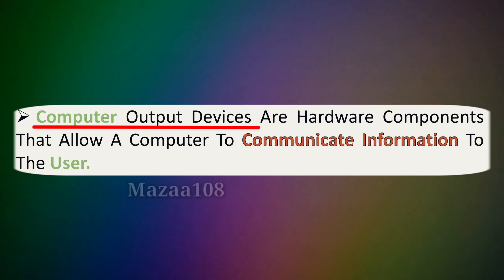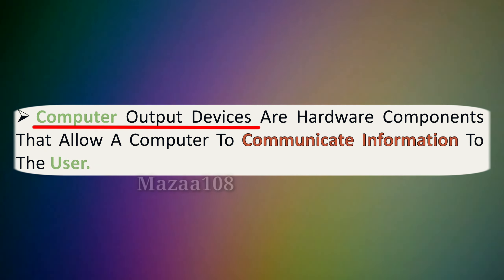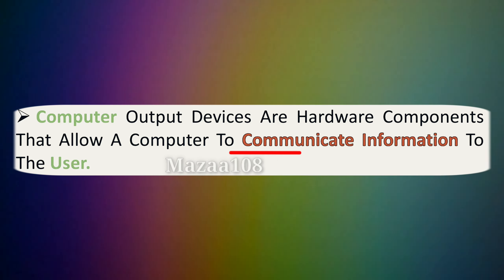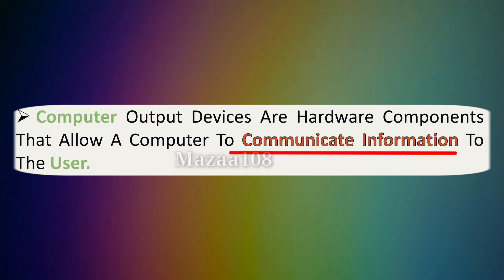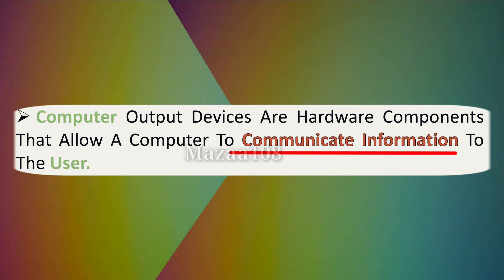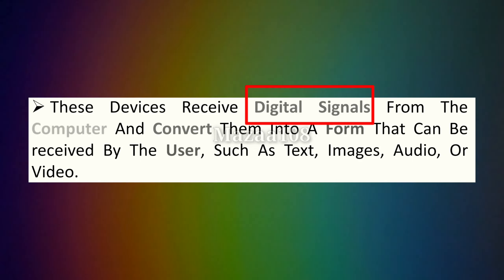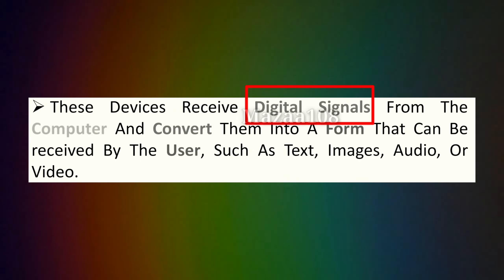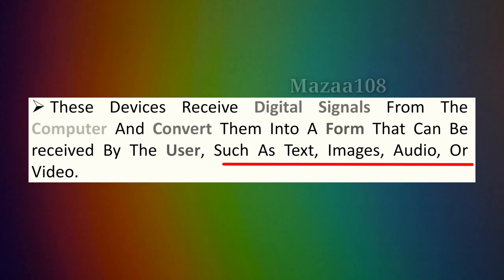Computer output devices are hardware components that allow a computer to communicate information to the user. These devices receive the digital signal from the computer and convert them into a form that can be received by the user, such as text, image, audio, or video.